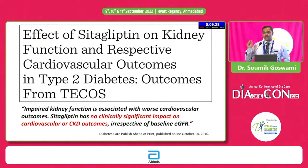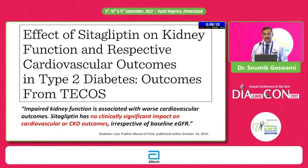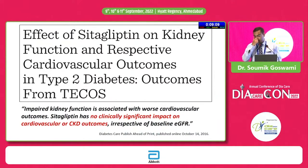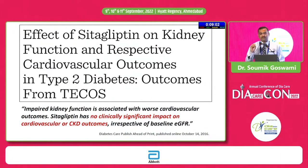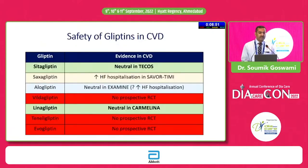When using a drug in renal dysfunction, it's not only efficacy and hypoglycemia risk we must consider. Patients with renal dysfunction have a very high risk of atherosclerotic cardiovascular disease, heart failure, and progression of renal deterioration. Looking at the TCOS trial, which included about 3,500 patients with moderate renal dysfunction, we can be reassured that Sitagliptin does not have any cardiorenal safety issues in patients with renal dysfunction.